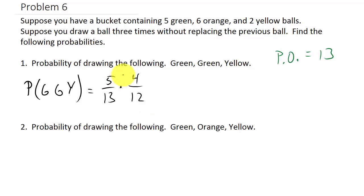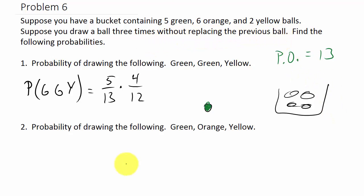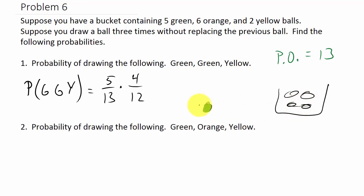Why is it 4 over 12? Because when I drew the first ball — a green one — I did not put it back. The problem says without replacing the previous ball. So when I reach into the bucket again, that green ball is sitting out, meaning there are only four green balls left and only 12 total balls remaining.